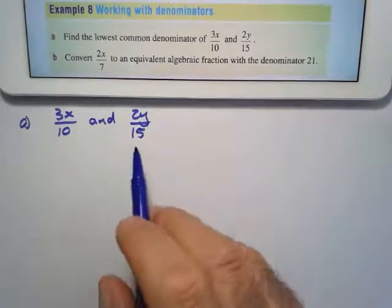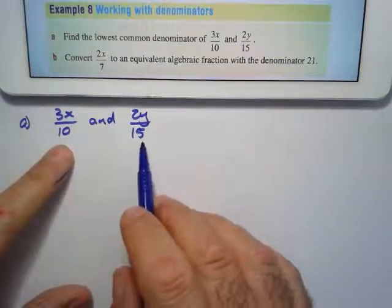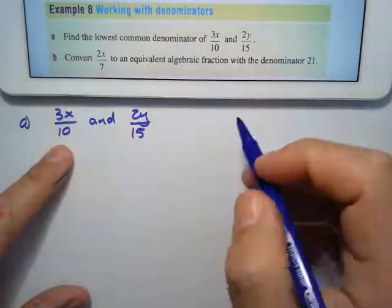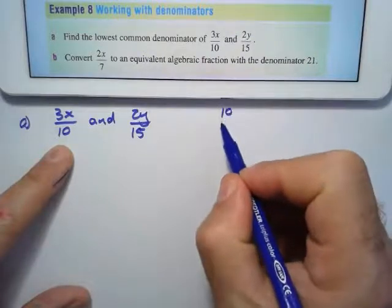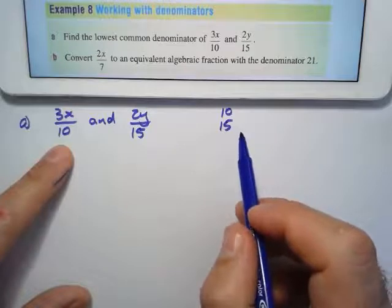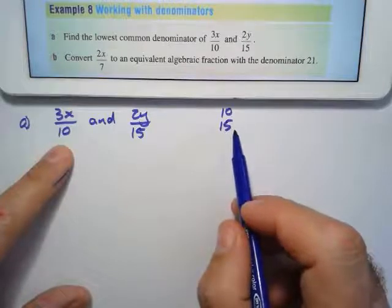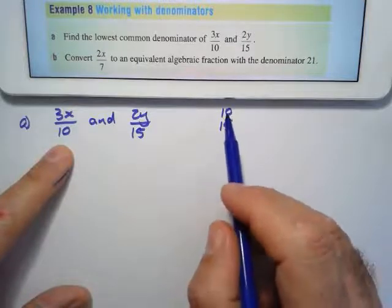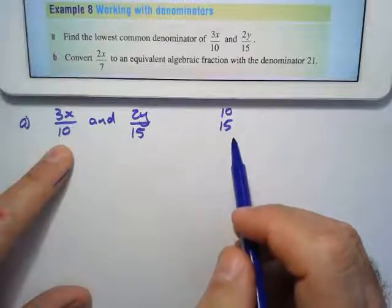Two methods. The first method is if you have small numbers - we have 10 and 15 - and what we do is we start with the biggest number and we just write multiples of them until we see that 10 can divide into that.